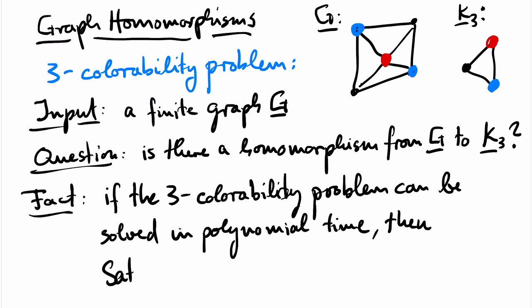One can show that if this problem can be solved in polynomial time, then the one million dollar satisfiability problem for propositional logic from the previous session can be solved in polynomial time as well. This is the reason why researchers believe that the three colorability problem cannot be solved in polynomial time.